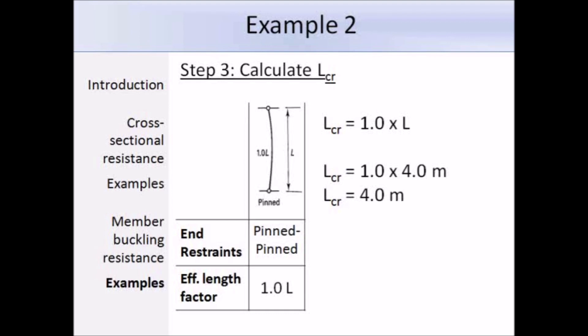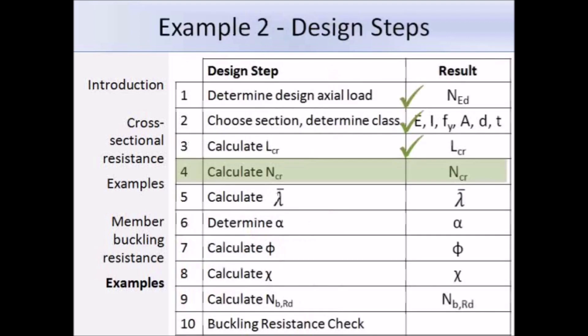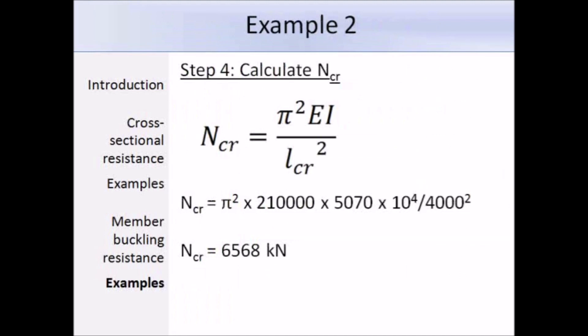Next we calculate the elastic critical buckling load NCR. NCR equals π² times Young's modulus times the second moment of area, divided by the effective length squared. Substituting the values gives an answer of 6568 kN.